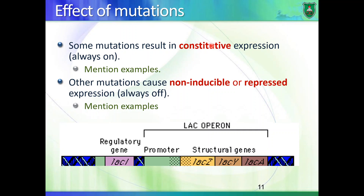Think about mutations in the lac operon that would result in constitutive expression. Here's an example: if you have a mutation in the operator itself that prevents the lac I product — the repressor — from binding to the operator, this means the RNA polymerase can bind freely to the promoter and transcribe the lac operon all the time. Think of other mutations that can result in constitutive expression.